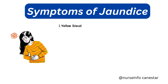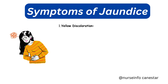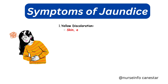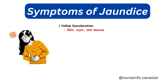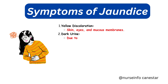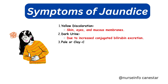The symptoms of jaundice can vary depending on the underlying cause. Yellow discoloration is the hallmark sign of jaundice, visible on the skin, whites of the eyes, and mucous membranes.